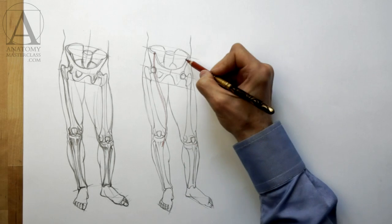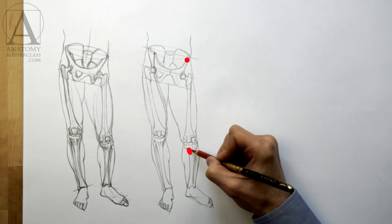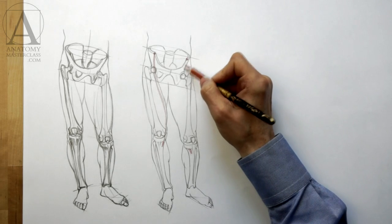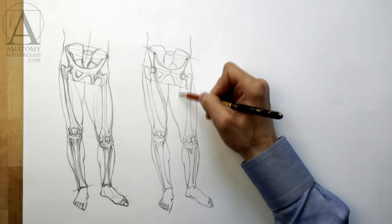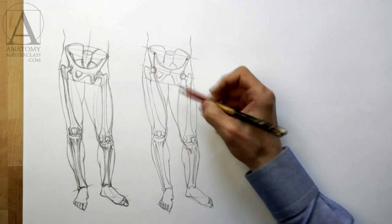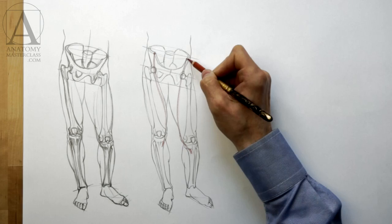The tailor's muscle starts from the frontal upper edge of the pelvis and inserts into the inner top portion of the shin bone. Its main function is to help other muscles bring the leg into the cross-legged position. The tailor's muscle is long and flat like a belt. It goes diagonally downward and inward around the upper leg.